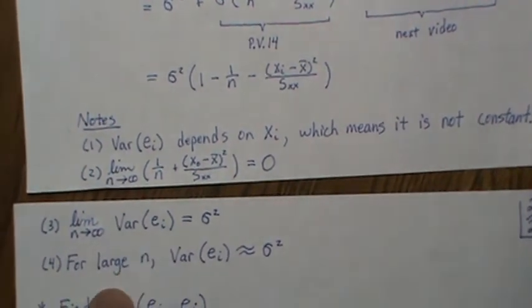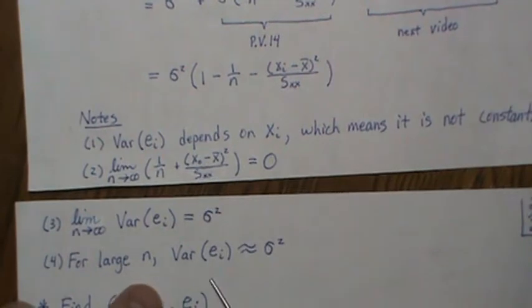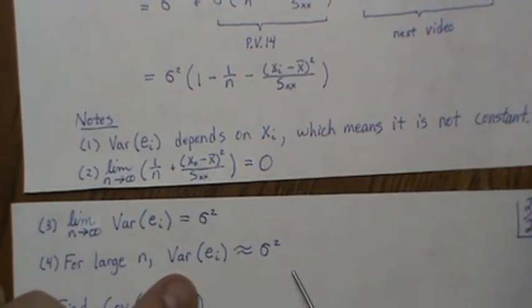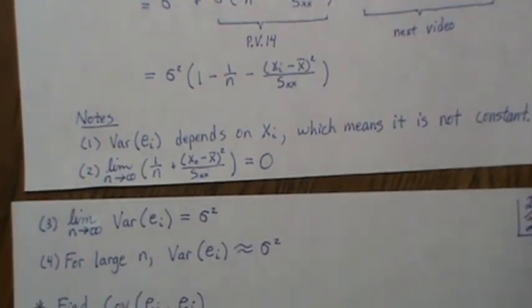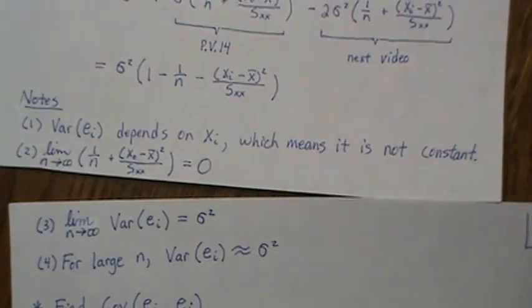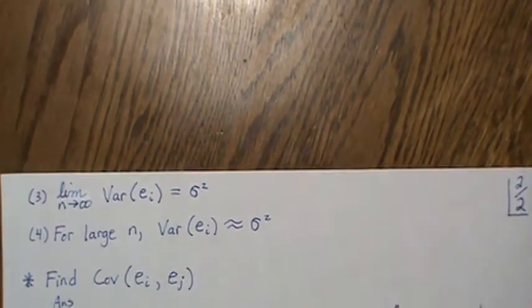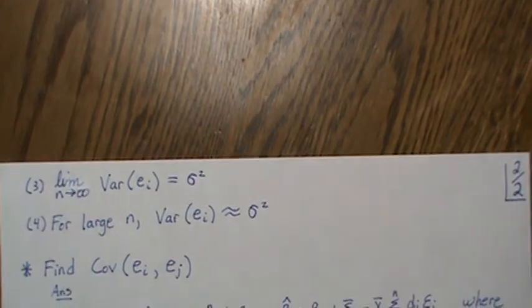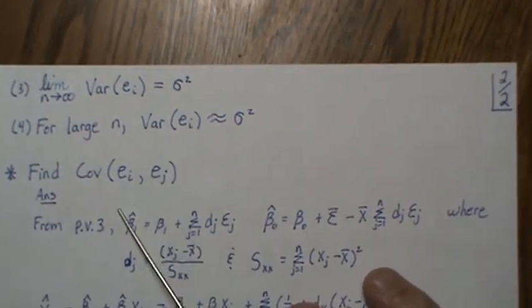So the variance is constant asymptotically, and for large n it's approximately constant. The larger the sample size, the better the residual will resemble the population error term. Now let's look at the covariance between any two residuals.